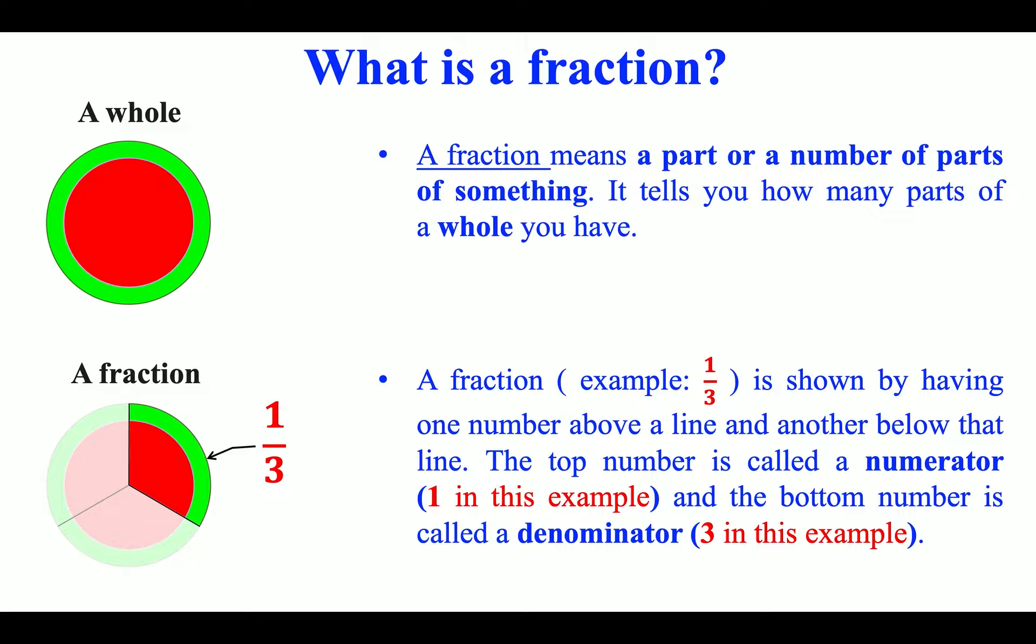A fraction, example 1 slash 3, is shown by having one number above a line and the other below that line. The top number is called a numerator, 1 in this example, and the bottom number is called a denominator, 3 in this example.